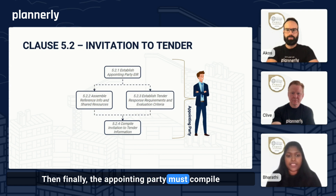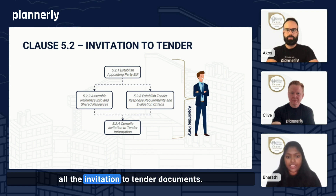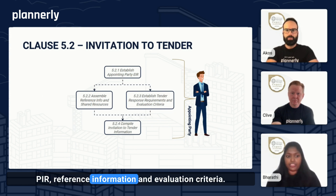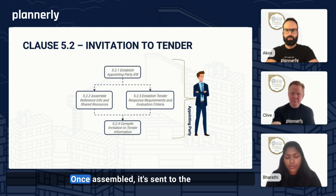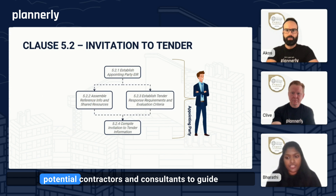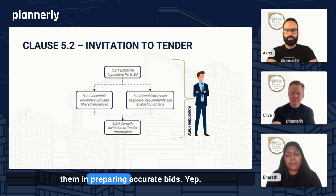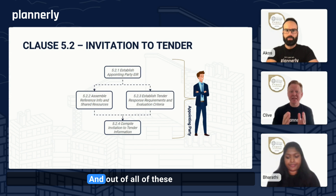Finally, the appointing party must compile all the invitation to tender documents. This package includes the EIR, PIR, reference information, and evaluation criteria. Once assembled, it's sent to the potential contractors and consultants to guide them in preparing accurate bids.